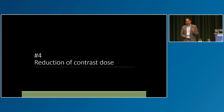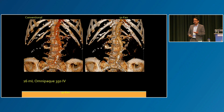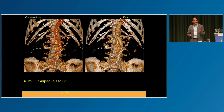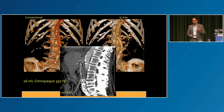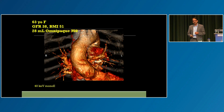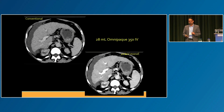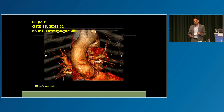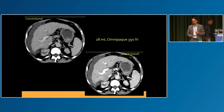We can use spectral CT to reduce contrast dose because the lower keV images significantly increase the attenuation of iodine. We can do a CTA of the abdomen and pelvis with 16 ml. On the low keV images, you see perfect enhancement of the vascular bed. We can also do this in bigger patients — this is a patient with a BMI of 51, and that's a perfectly diagnostic CT angiogram of the thoracic aorta with 28 ml.